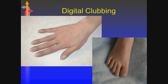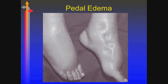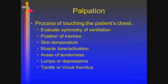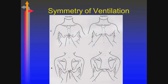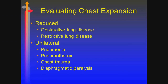You can see some peripheral clubbing. When you get to your pediatric rotation, hopefully you'll be able to see some folks with pronounced clubbing — cystic fibrosis patients, for example. Pedal edema is swelling of the ankles. Palpation is basically anything you assess when you touch the patient — including checking the position of the trachea, use of muscle movement, tactile and vocal fremitus, looking for symmetry of ventilation, and whether there's a reduction in chest expansion or if it's unilateral.